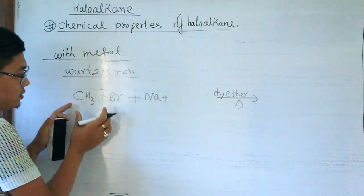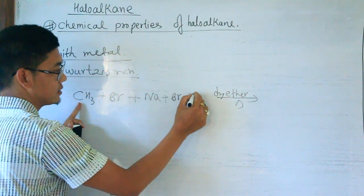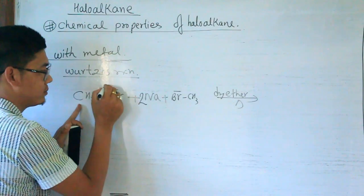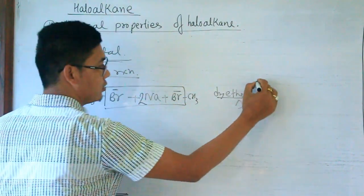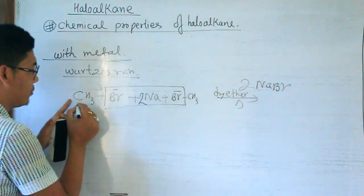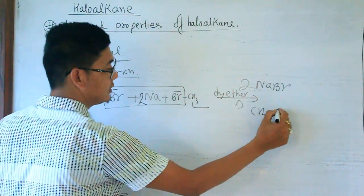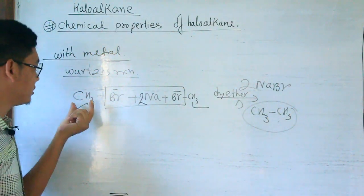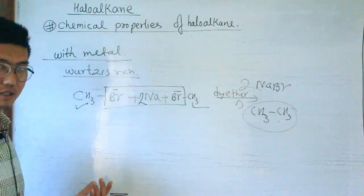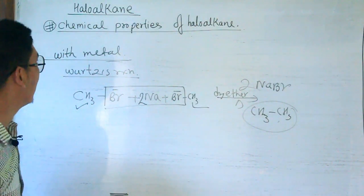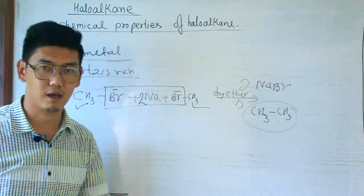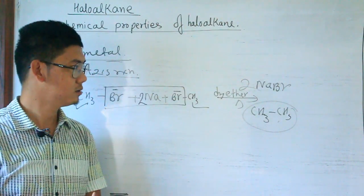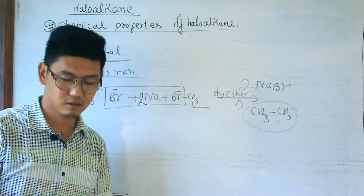So to summarize, we have covered the chemical properties of Haloalkane including nucleophilic substitution, reaction with NaCN/KCN, ambident nucleophiles (CN⁻ and NO₂⁻), elimination reactions, Grignard's reagent, and the Wurtz reaction. More chemical properties of Haloalkane will be explained in the next video. Please like and subscribe to our channel.